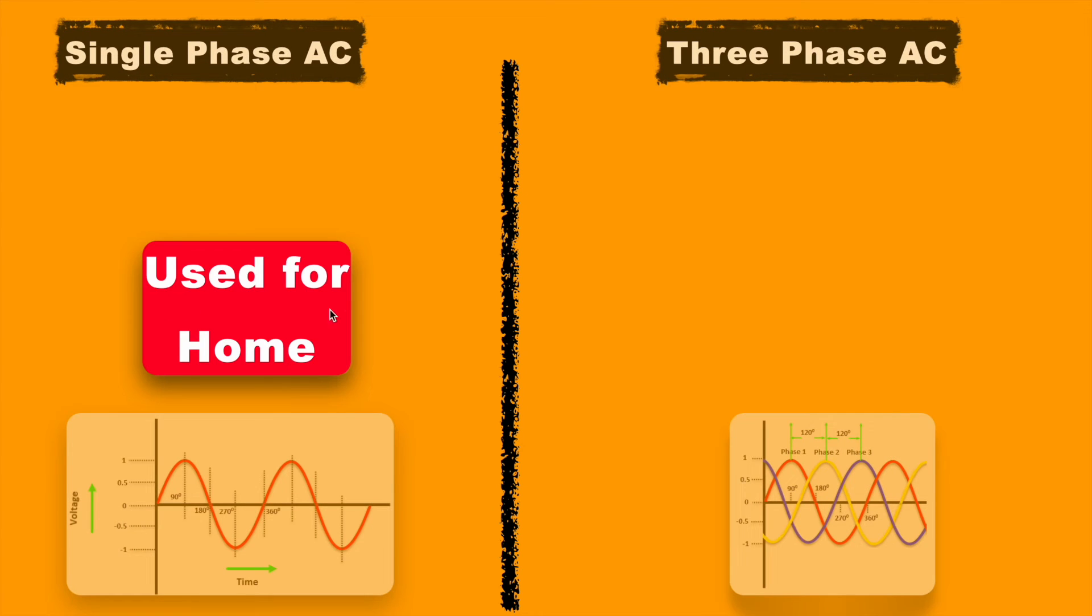The third difference: as the single phase power supply doesn't provide constant power to the load, it is commonly used for domestic applications or home. While the 3 phase power supply can provide constant power and has very high efficiency, it is used for industrial applications or heavy equipment.